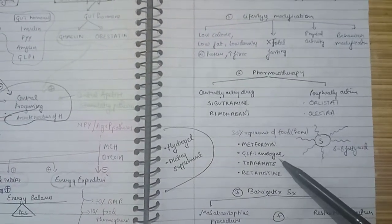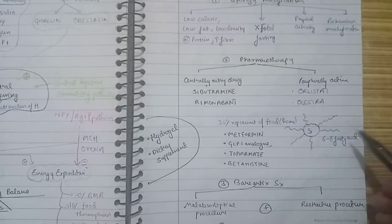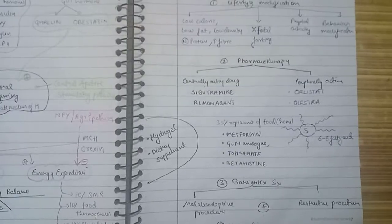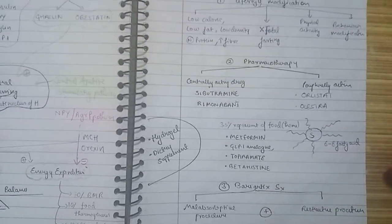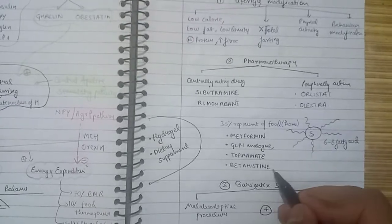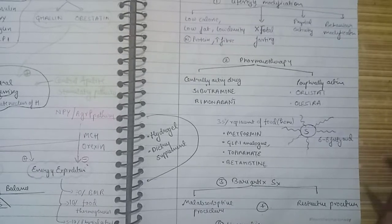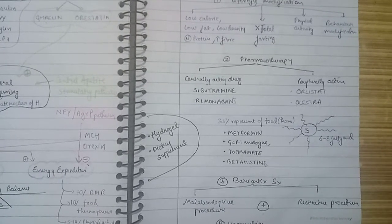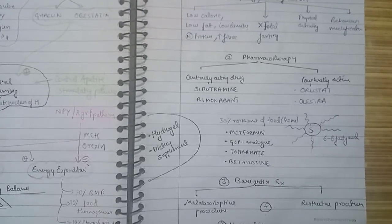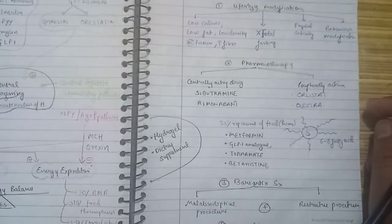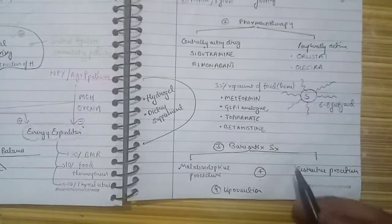Topiramate is an anti-epileptic drug but has features that decrease obesity and is used in many places. Betahistine, an H1 blocker, not only maintains and suppresses appetite but also selectively suppresses fatty meal intake. This is what we need to know about pharmacotherapy.